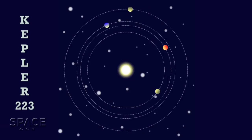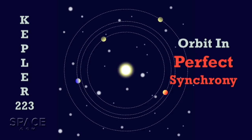In the case of star system Kepler-223, this planetary interaction has created something special: a family of planets that orbit their parent star in perfect synchrony.